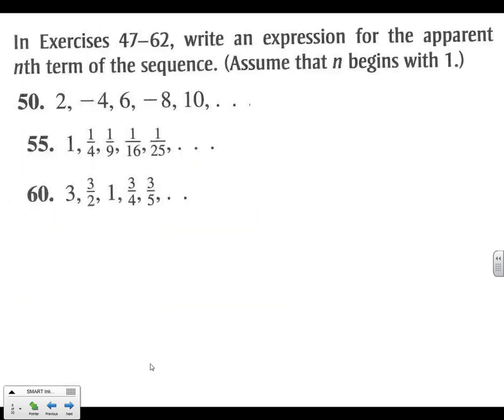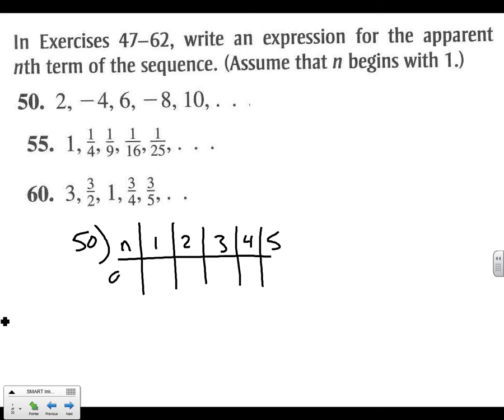Alright. Let's move on then to problem 50. For an expression for the apparent n-th term of the sequence. So let's come up with an equation on 50. We can make a t-table like this using n, the first 5 terms. And a sub n, it would be our bottom of our table. 2, negative 4, 6, negative 8, and 10. So the first thing I'm going to look at is, can I figure out how to do this equation not looking at the negatives? Because the negatives will come later since they're alternating. Positive to negative, negative to positive.